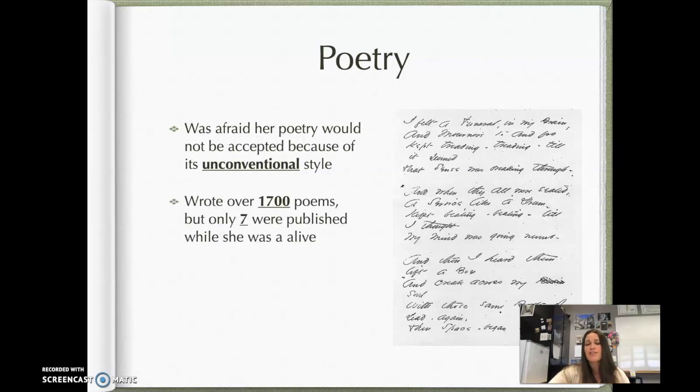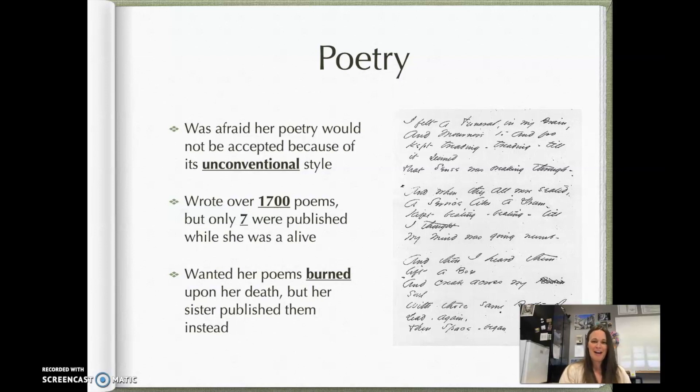She actually wrote over 1,700 poems, but only seven were published while she was alive. So she did not pursue publishing or publication during her lifetime. In fact, she didn't really want her poems out there for the world. She wanted her poems burned upon her death. But her sister went against her wishes, went against her death wish, and published them instead. So the reason why we have Emily Dickinson's poetry today is because her sister was a total rebel and didn't listen.